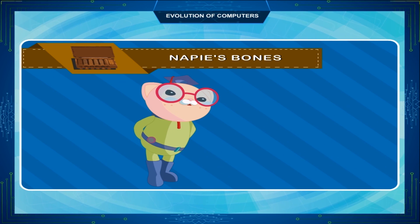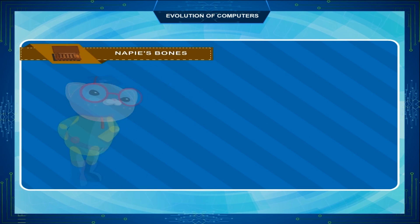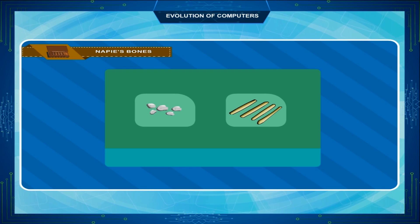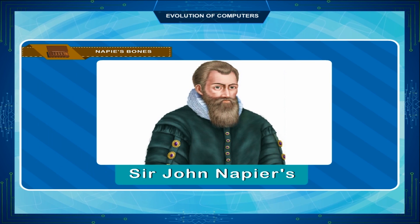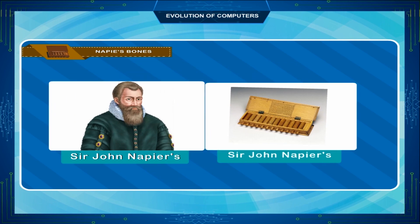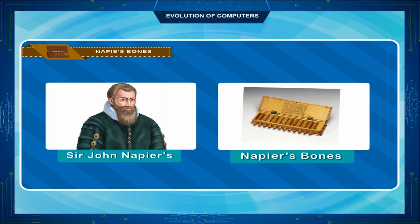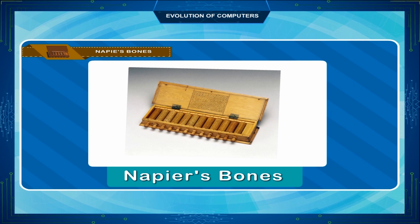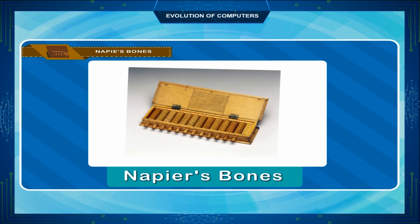Napier's Bones: As necessity demanded, scientists started inventing better calculating devices. In this process, John Napier of Scotland invented a calculating device in the year 1617 called Napier's Bones. In the device, Napier used bone rods for the purpose of counting, where numbers are printed on these rods. Using these rods, one can do addition, subtraction, multiplication and division easily.